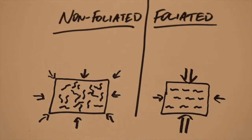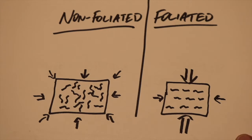So, what is foliation? Foliation is the preferential alignment of platy and elongated minerals in a metamorphic rock due to some kind of pressure or stress that is greater in one direction or the other.